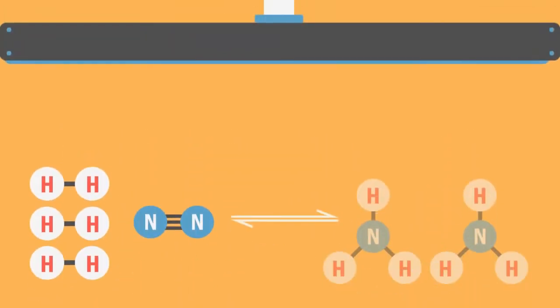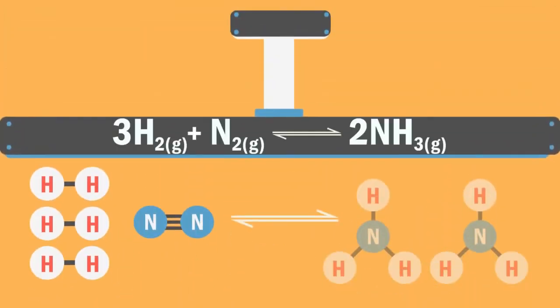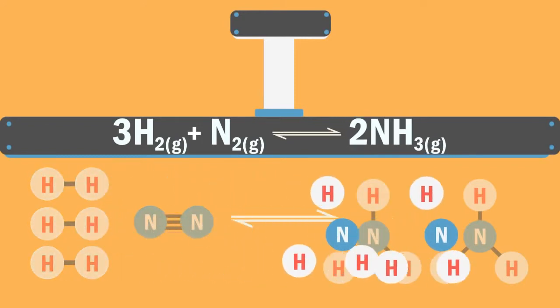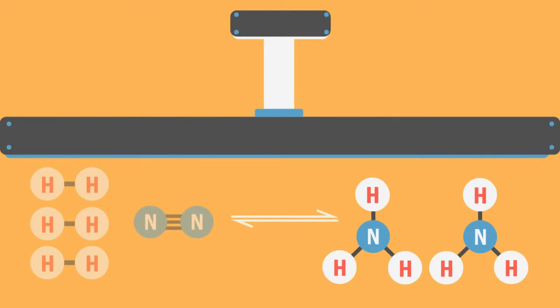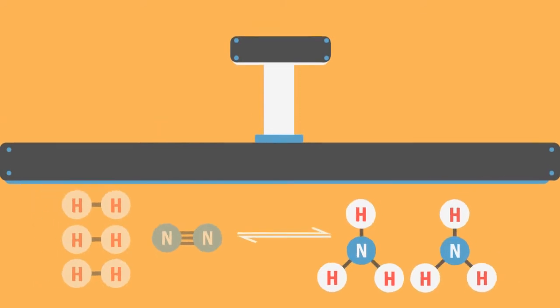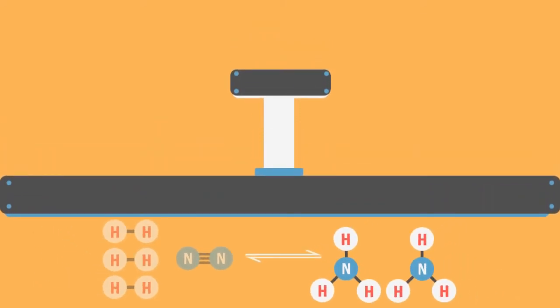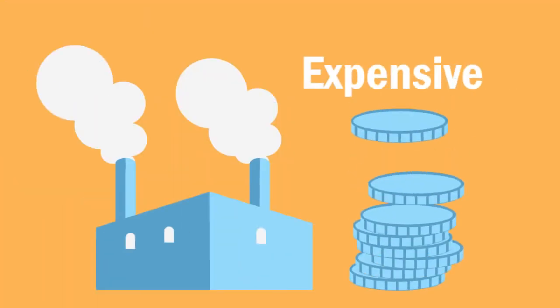Le Chatelier's principle tells us that increasing pressure will favor the side with fewer moles. For our case, the production of ammonia. It would make sense to conduct the reaction at a very high pressure, but we must also remember that it is expensive to build and operate a plant that can withstand such high pressures. Therefore, a compromised pressure of 200 atmospheres is used.